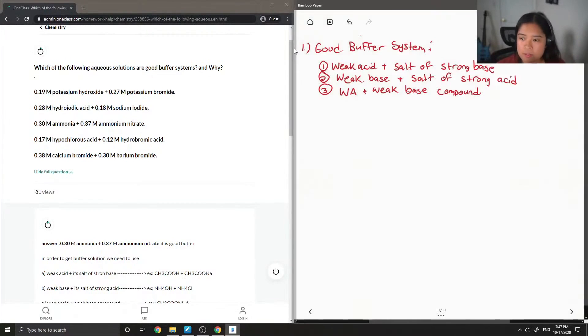Okay, so now I'll go over all the different options that they give us. So first we have potassium hydroxide, which is KOH, plus potassium bromide, which is KBr. So potassium hydroxide is a strong base, but KBr is also a strong salt. So both potassium and bromide are considered strong, so therefore this would not be considered a good buffer system.